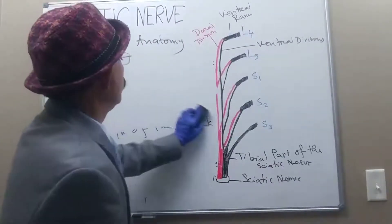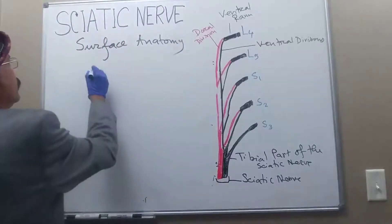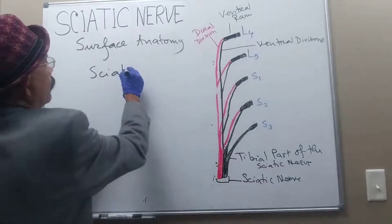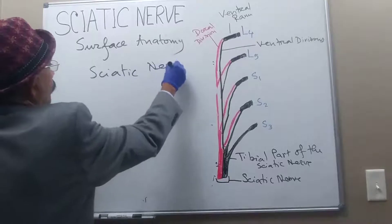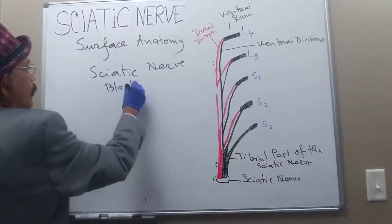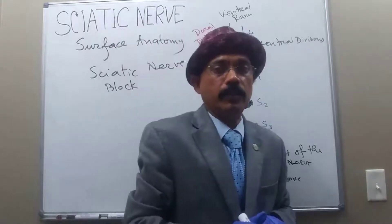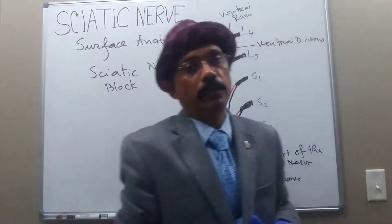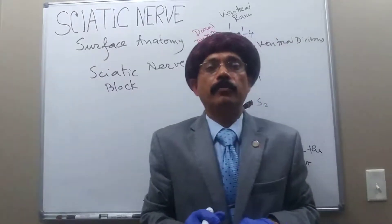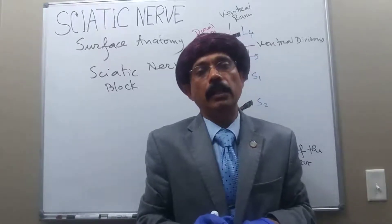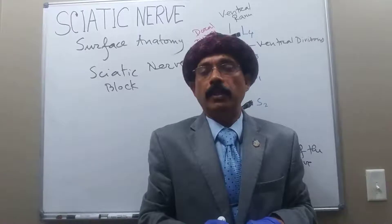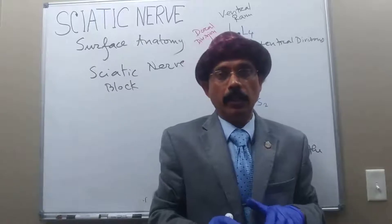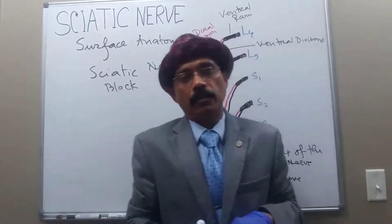Another importance of the surface anatomy is the sciatic nerve block. This is done to perform surgery especially on the muscles or structures below the knee joint, because the entire muscles below the knee are innervated by the tibial nerve and the fibular nerves, which are derived from the sciatic nerve.